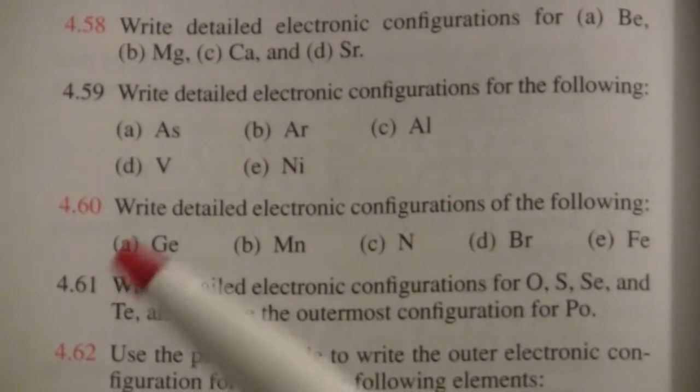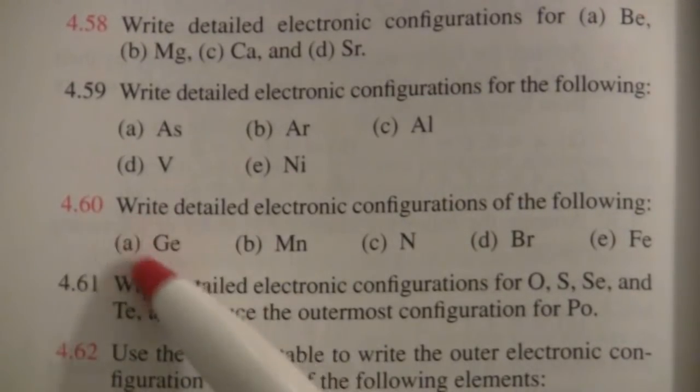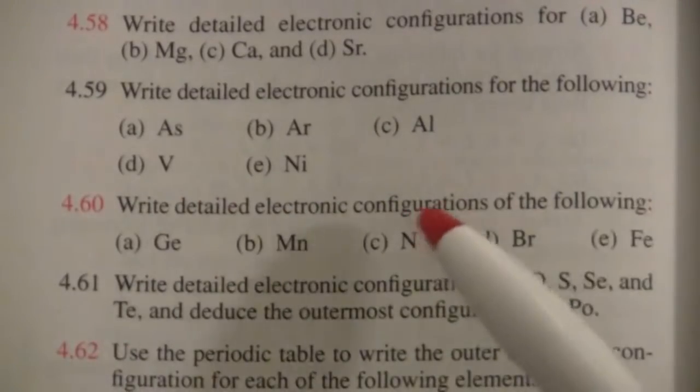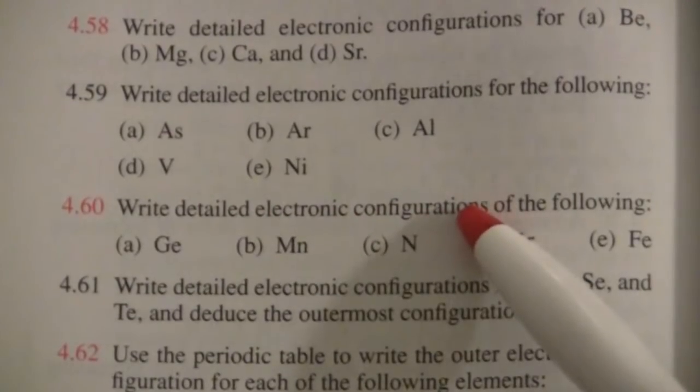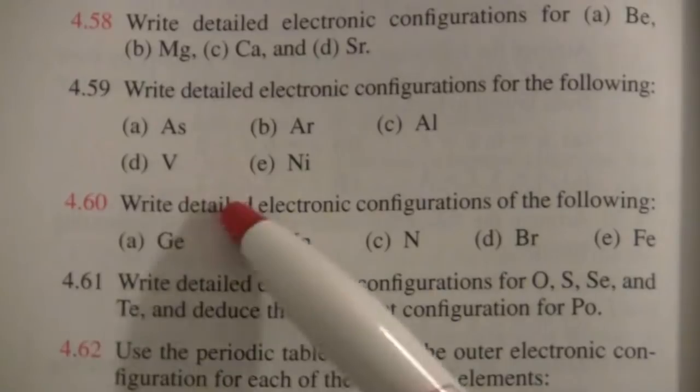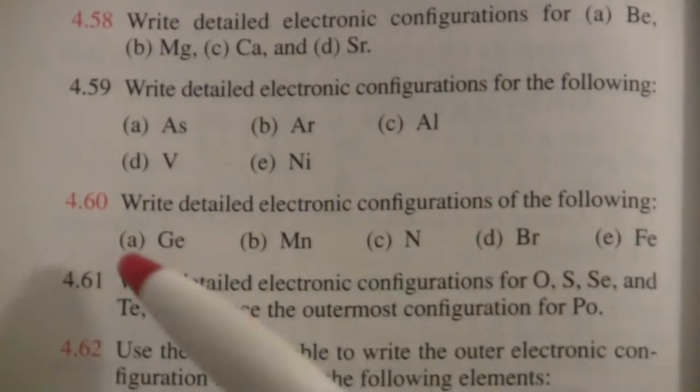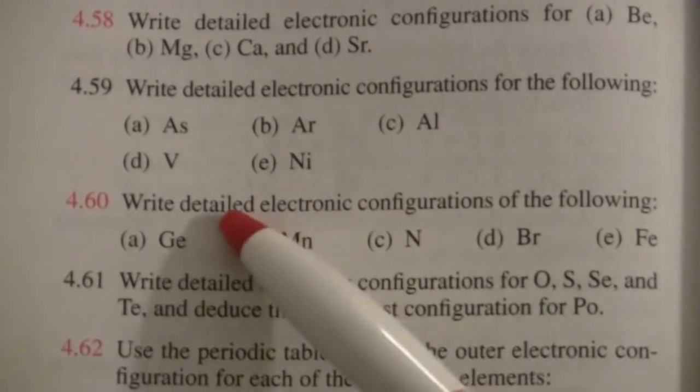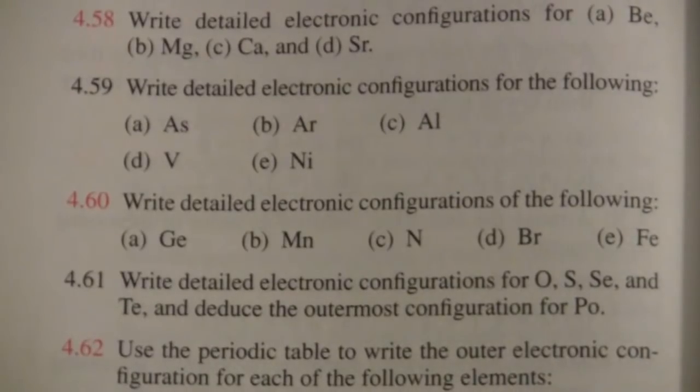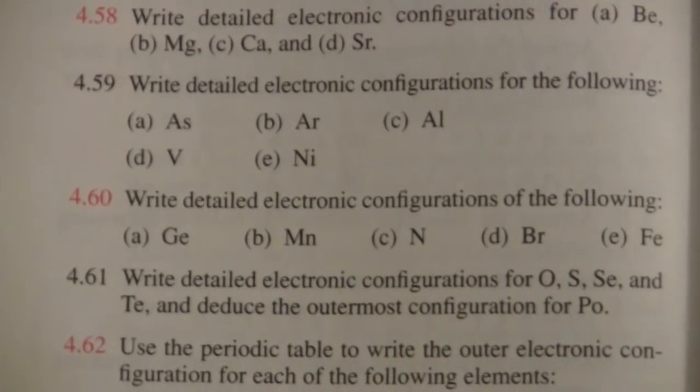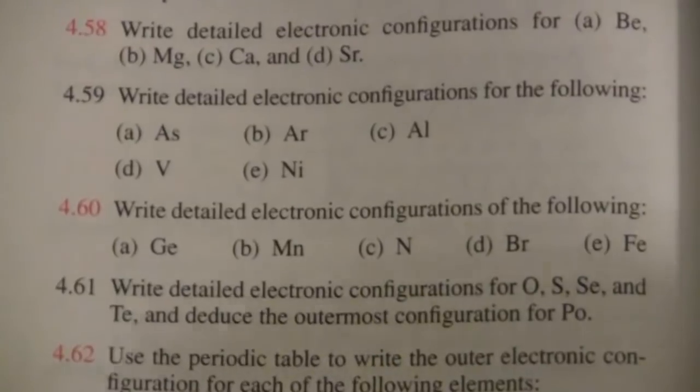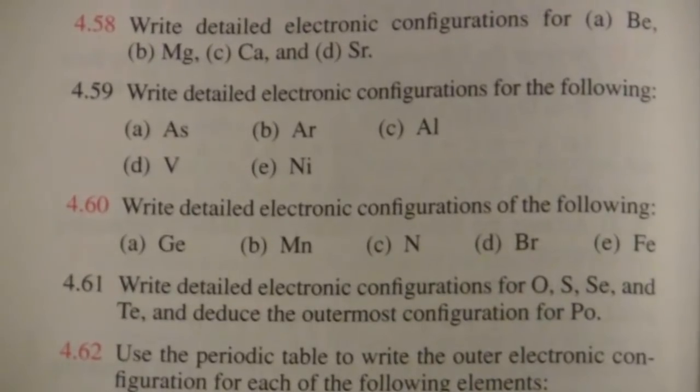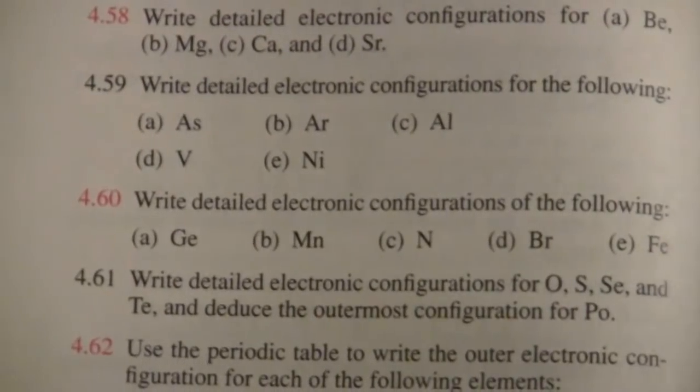Okay, let's do this problem to get a little bit of practice with writing electronic configurations. It says to write the detailed electronic configuration for each of the following. When it says detailed electronic configuration, it's referring to not using the Noble Gas abbreviations.